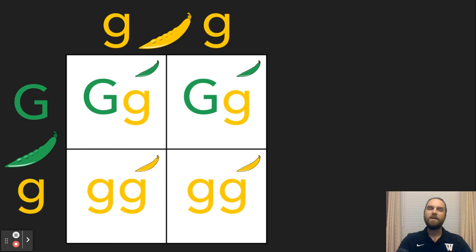Now the green seed pod parent has a capital G, meaning it has that dominant allele for green. It also happens to have a lowercase g, which is the recessive allele for yellow. But since green is dominant over yellow, the pods are green.